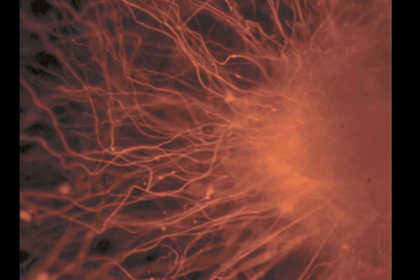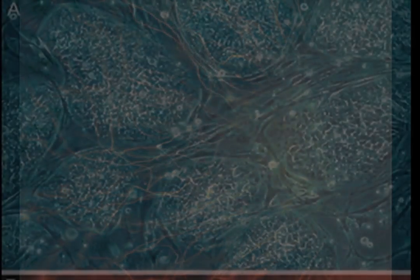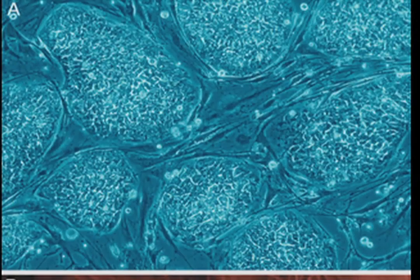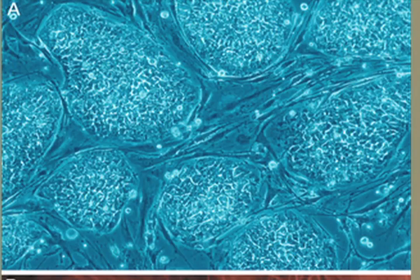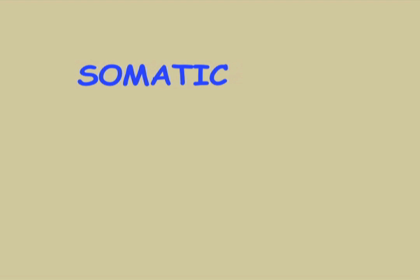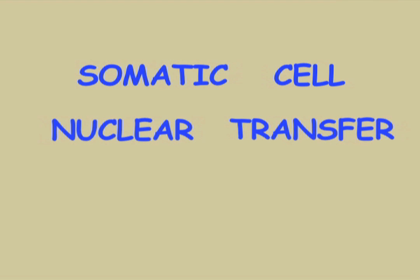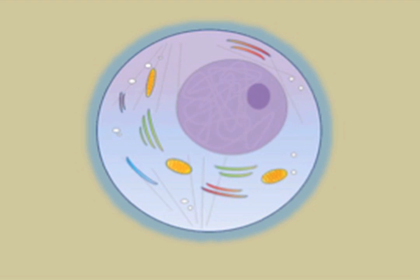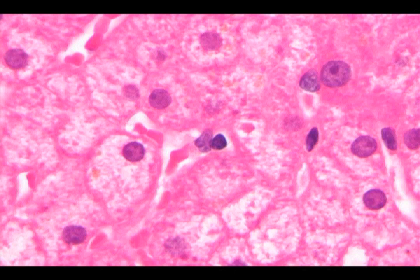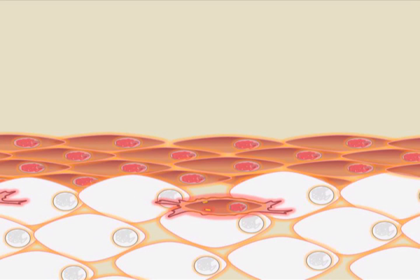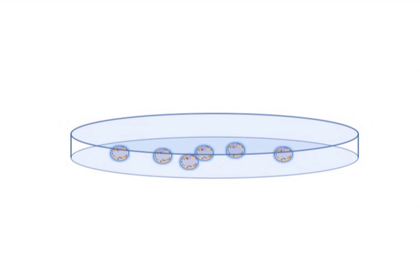In May of 2013, scientists in the US managed to generate them from adult cells using a process called somatic cell nuclear transfer. Somatic cells are the cells which make up the body, such as liver, brain, blood, or skin cells. It's the same technique that was used to make Dolly the sheep.